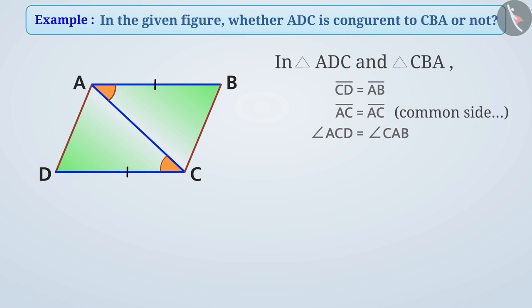You can see two corresponding sides and angle between them of triangle ADC are equal to two corresponding sides and angle between them of triangle CBA.